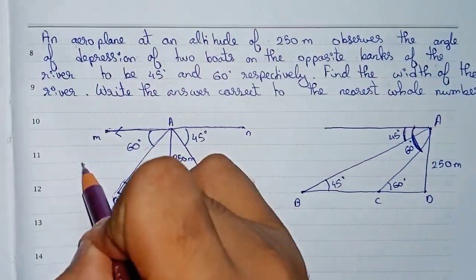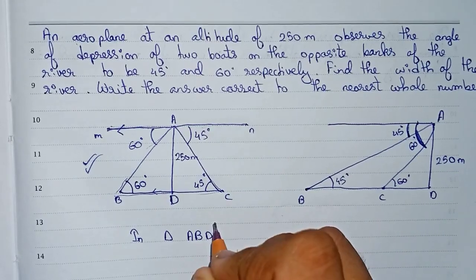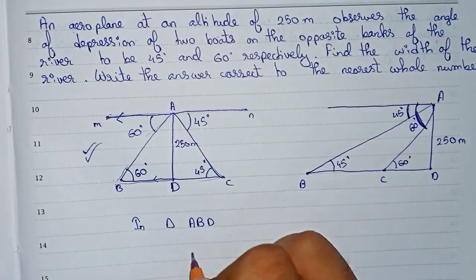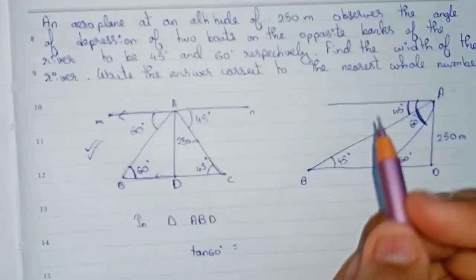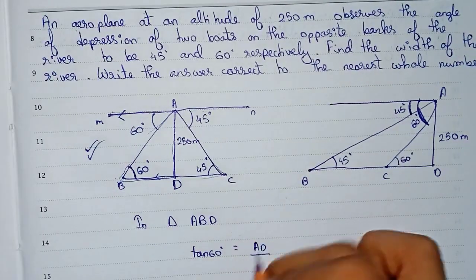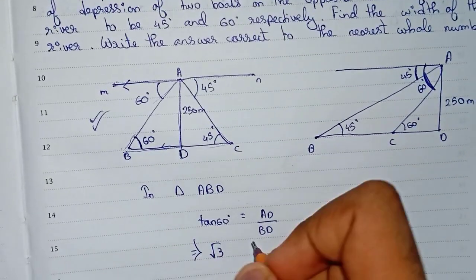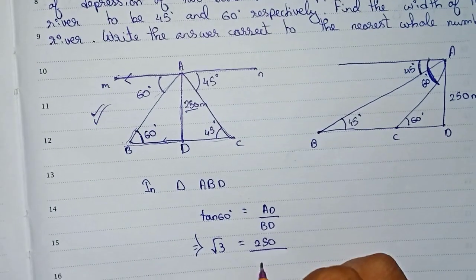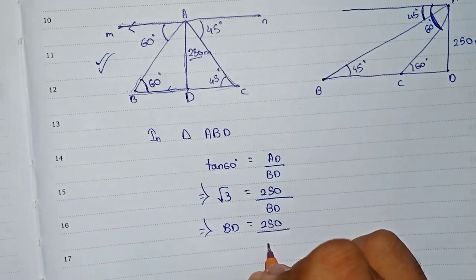We will take the first triangle, triangle ABD. In triangle ABD, tan 60 equals height over base, which is AD over BD. The value of tan 60 is root 3, and AD is given as 250 meters. So we need to find the value of BD. Modifying this equation gives us BD equals 250 divided by root 3.